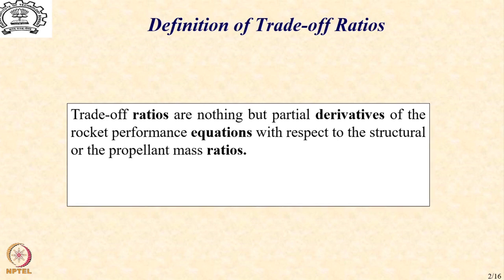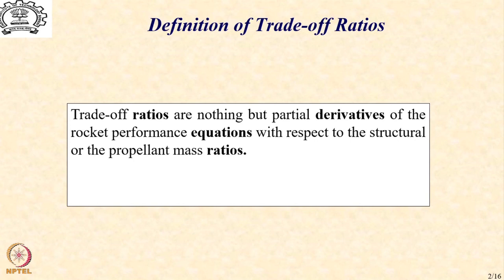As I had mentioned in the previous lecture, trade-off ratios are nothing but the partial derivatives of the rocket performance equations with respect to two configuration parameters — that is the structural mass or the propellant mass — which we know directly influence the rocket performance in terms of either the burnout velocity or in terms of the mission payload mass fraction.